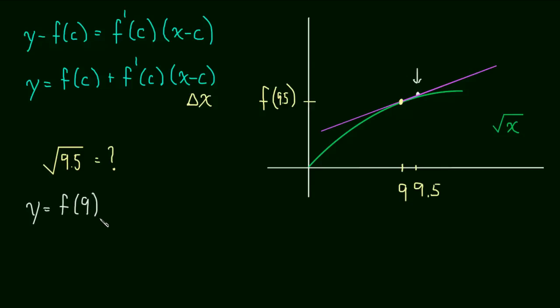So we're going to say the height of the tangent line is just equal to f(9). 9 was the value we chose because 9 was an easy value to choose. And because 9 is pretty close to 9.5, so our change in x is small. So f(9) plus f'(9) times by the change in x, which is just 0.5, or in other words, 1 half.